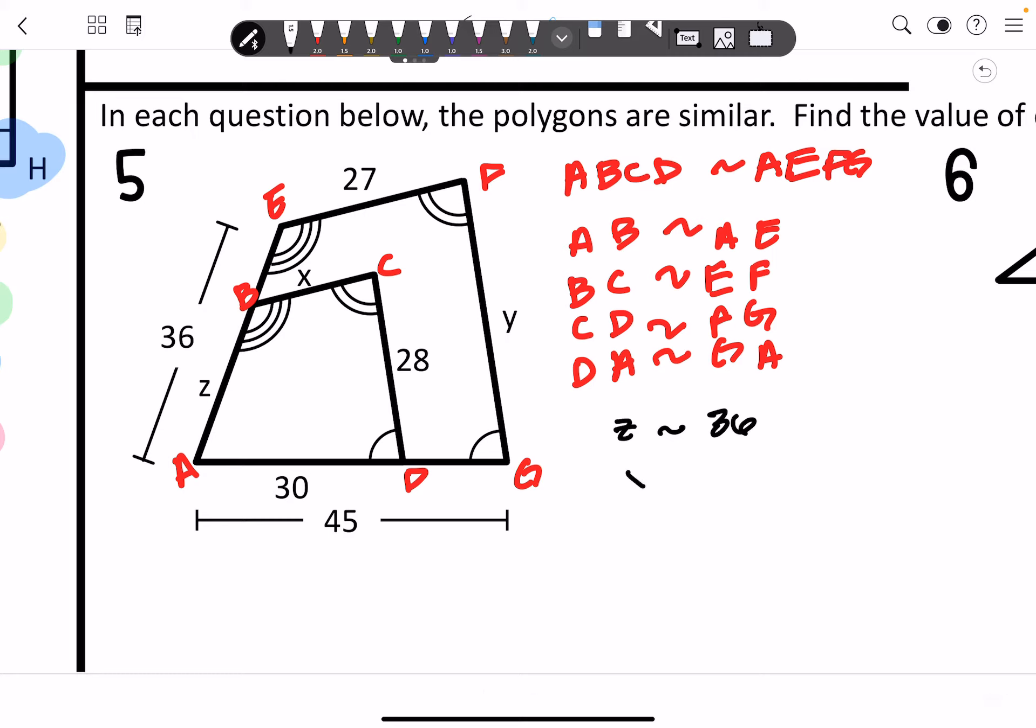X is BC, which is similar to 27. 28 is similar to Y. And then lastly, 30 is similar to 45.